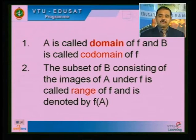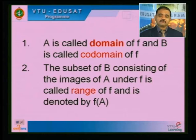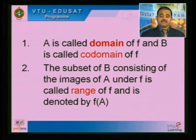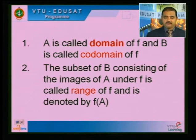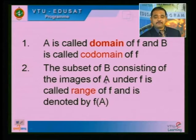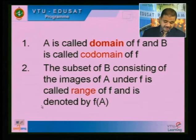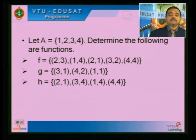Capital A is called the domain of F and B is called the codomain of F. The subset of B consisting of the images of A under F is called the range of F, denoted by F(A). We saw this problem yesterday also.